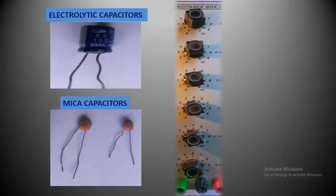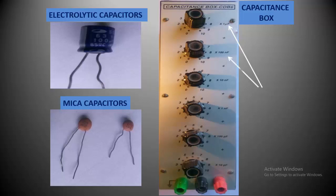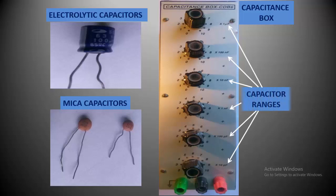Let us take a look at capacitance boxes. In these boxes, you will see various ranges: 1 microfarad, 100 nanofarad, 10 nanofarad, 1 nanofarad, 100 picofarad, and 10 picofarad. These are the various capacitance ranges, and below you will see the connecting terminals.